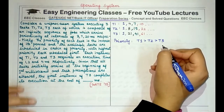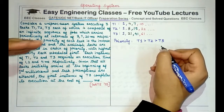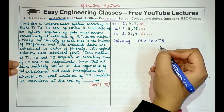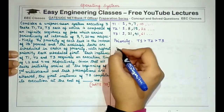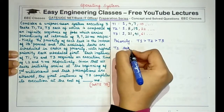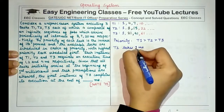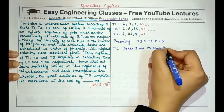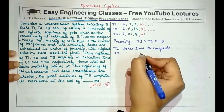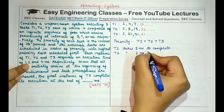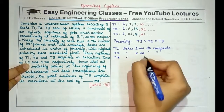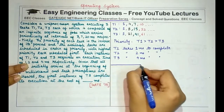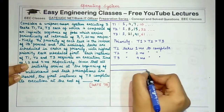If a higher priority process arrives, the currently running process will be preempted. The execution times are: T1 takes 1 millisecond to complete, T2 takes 2 milliseconds to complete, and T3 takes 4 milliseconds to complete. Using all this information, we'll find out at what time T3's first instance gets completed.